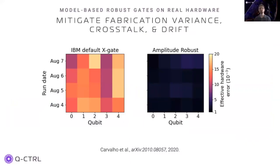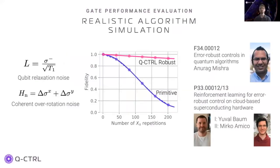Our model-based robust optimized gates have been validated on real hardware. These results are on an IBM machine showing the error in parallel single qubit operations on the chip for different days. The robust gates offer higher performance with fully parallel operation, suppress fabrication variance between qubits, simplify calibration, and extend the useful calibration window by around 10 times. We have developed a realistic model-based algorithm simulator to incorporate hardware noise channels including qubit relaxation noise and coherent noise such as over-rotation errors due to calibration errors or parameter drift. By modeling repeated gates under the influence of these noise channels, the sustained high fidelity performance of the Q-Control robust optimized gates is clear, in contrast to the fast fidelity decay of primitive gates.